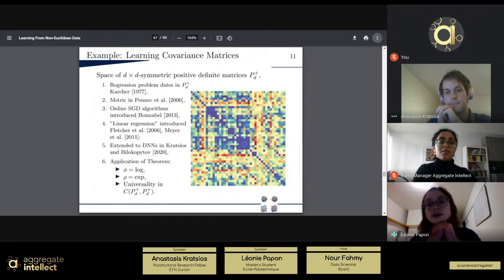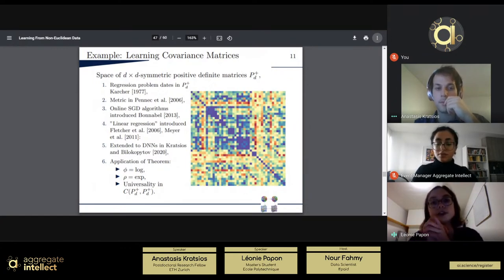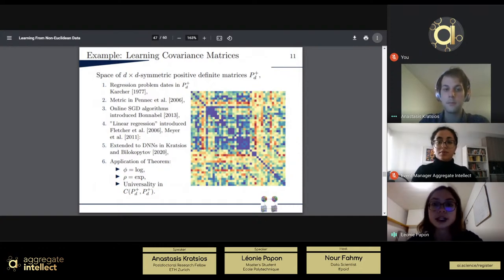So, now we are going to move on to an example where our results apply. The first example I would like to give is when you want to use a neural network to learn from covariance matrices. So, let us denote by p, lower script d, upper script plus the space of symmetric positive definite matrices of size d times d. So, this is obviously not an Euclidean space, and this space has somehow been challenging for several decades.